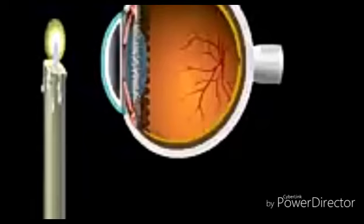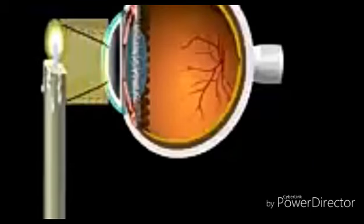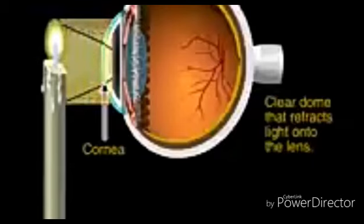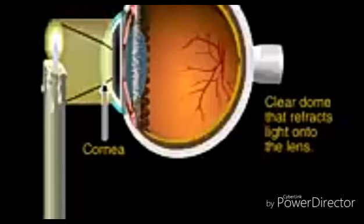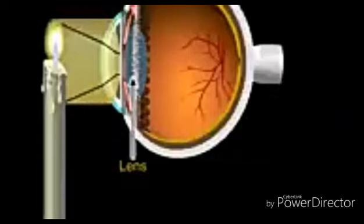This candle can help us understand how the eye captures images and then sends them to the brain. First, the candlelight passes through the cornea. As it does, it's bent, or refracted, onto the lens.